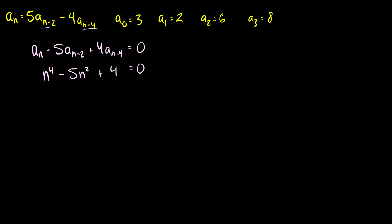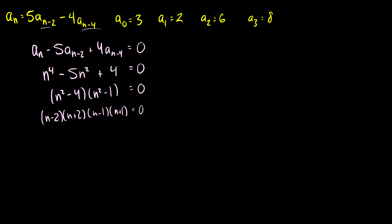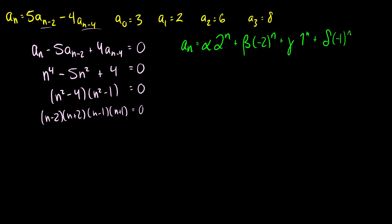Now we can factor this. So this will be (r^2 minus 4)(r^2 minus 1) equals 0. And factoring once more: (r minus 2)(r plus 2)(r minus 1)(r plus 1) equals 0. So this means that our a_n is going to be some constant alpha times 2^n, plus a constant beta times (-2)^n, plus some constant gamma times 1^n, plus some constant delta times (-1)^n.